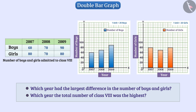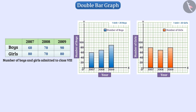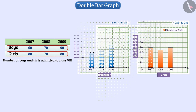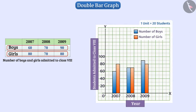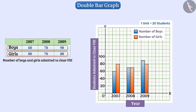In such a situation, a double bar graph is helpful. In this, we represent two sets of data on the same graph as a pair of bars. One bar represents one group of data and the other bar represents another group of data.